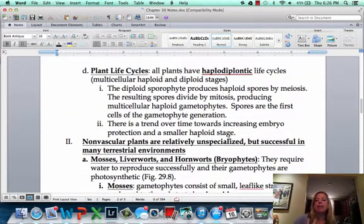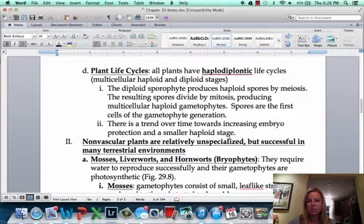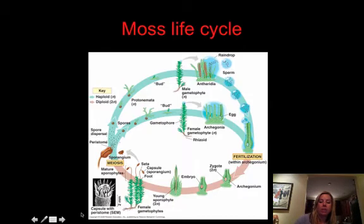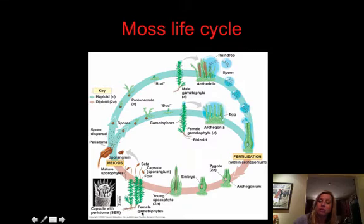Plants have a haplodiplontic life cycle, which involves haploid and diploid stages. Looking at the diagram, it follows the same cycle as protists. Starting with the gametophyte: it makes gametes, which fertilize to make a zygote. The zygote becomes the sporophyte, which makes spores, which turn back into the gametophyte — and so on.